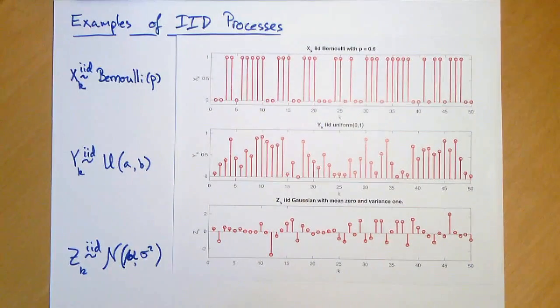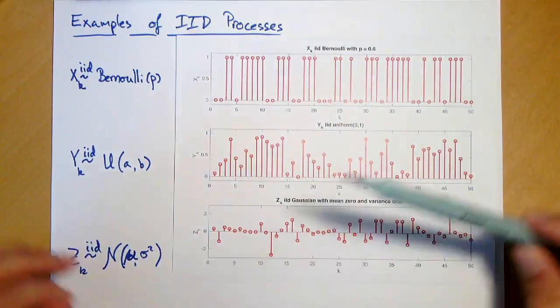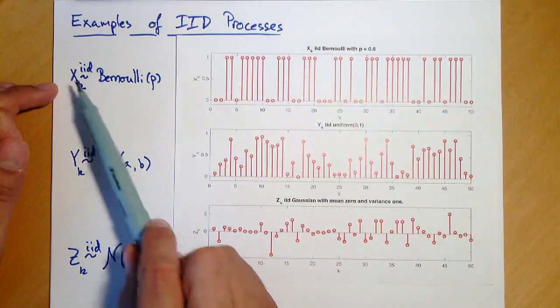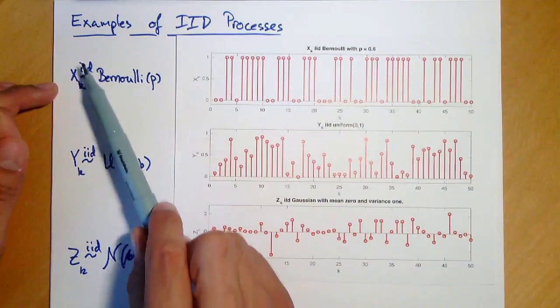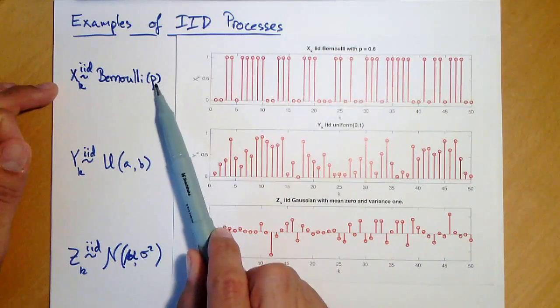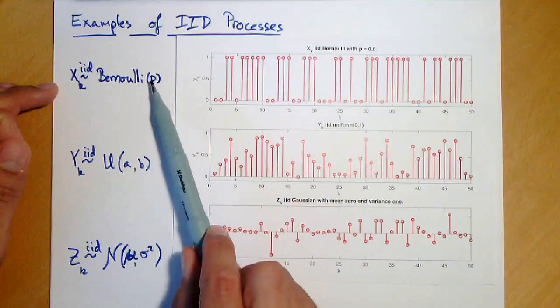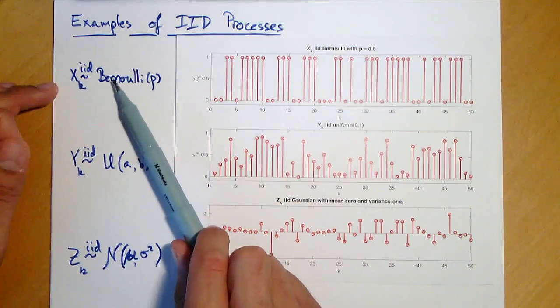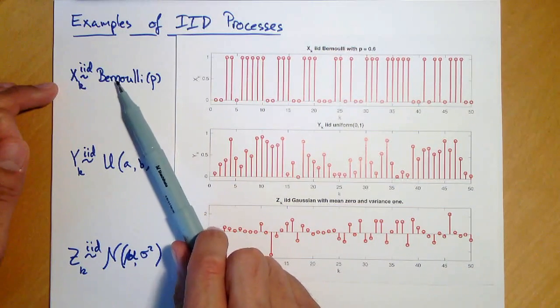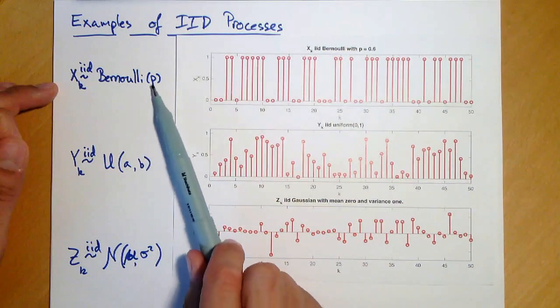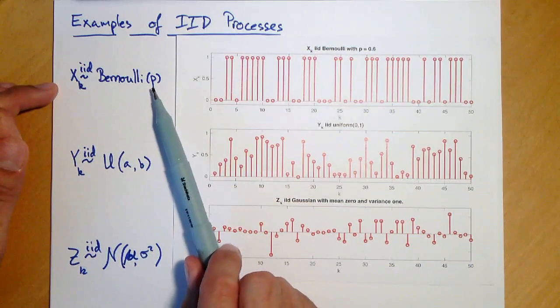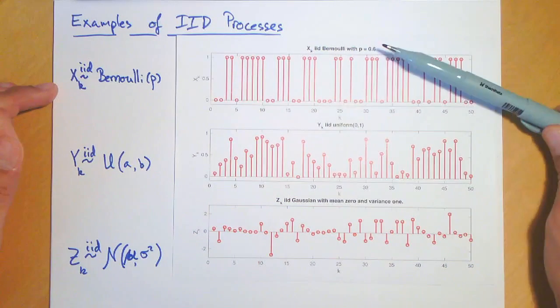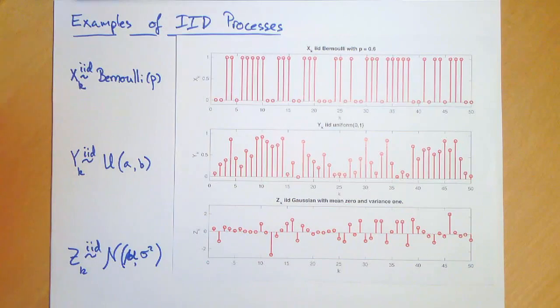Let us look at a few examples of IID processes. First example here, that's a Bernoulli process where all samples at every time are generated IID according to some Bernoulli random variables. This means a Bernoulli random variable is a variable that can take value either 0 or 1. It takes value 1 with probability p and value 0 with probability 1 minus p. And this is exactly what we see here. We have p equal to 0.6, so we have a bit more ones than zeros for the Bernoulli process.